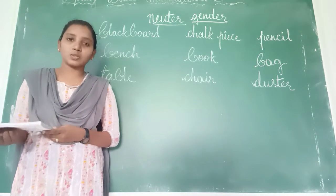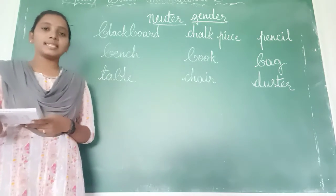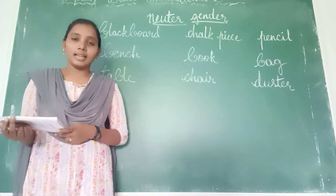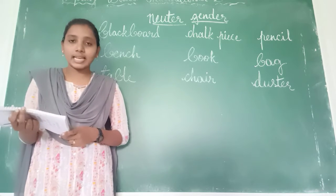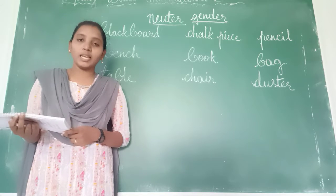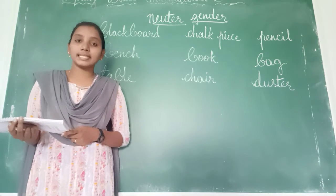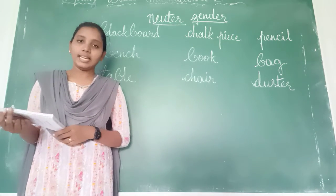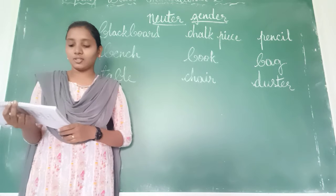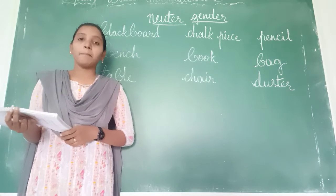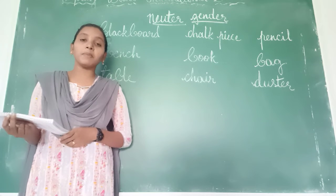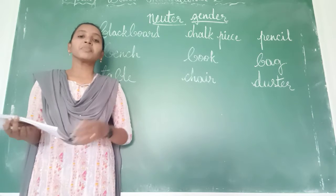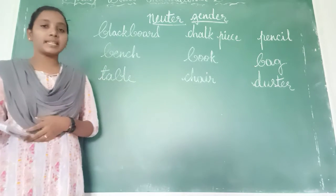Turn to page 23. Read the given sentences. See — 'This is my favorite pencil. It was gifted to me.' The pencil is being replaced with 'it.' 'The window is open. Please close it.' Which one we have to close? The window. Here also, the window is replaced with 'it.'